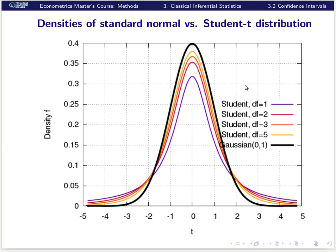So how does the Student t-distribution density look for different degrees of freedom? If we have only one degree of freedom, then we have extremely long tails. As we increase the degrees of freedom, we will asymptotically get the standard Gaussian, which is the black curve. Even for five degrees of freedom, there's not much difference for small deviations, but there is still much difference for large deviations — where the Gaussian is for all practical reasons zero, but the Student t-distribution is not. That's also understandable because more uncertainties reflect a larger spread of the estimations.